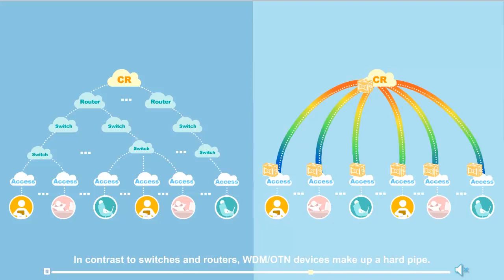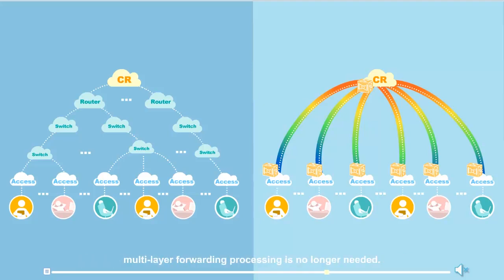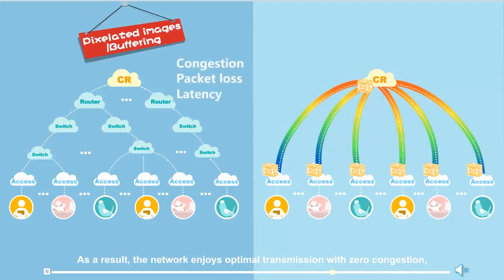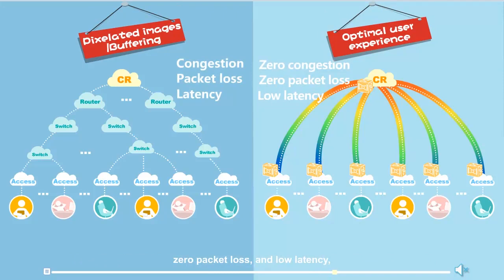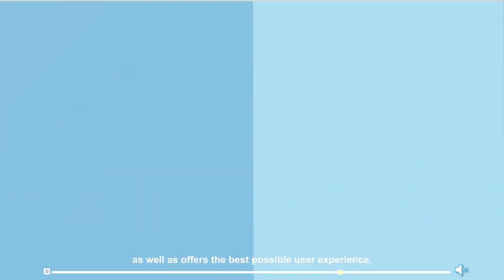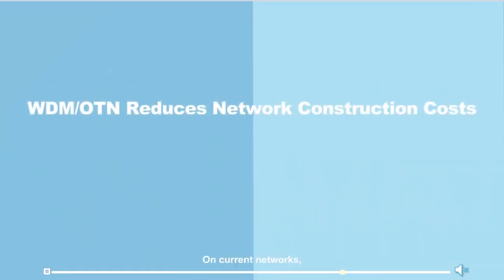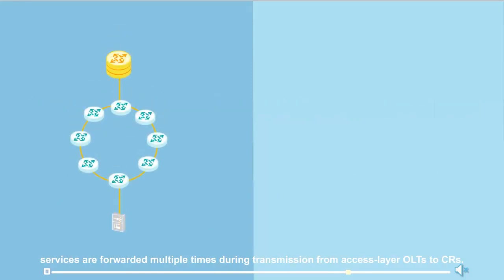Large bandwidth is an inherent advantage of WDM and OTN devices. In contrast to switches and routers, WDM and OTN devices make up a hard pipe. Once this pipe is constructed between the access layer OLTs and core layer core routers, multi-layer forwarding processing is no longer needed. As a result, the network enjoys optimal transmission with zero congestion, zero packet loss, and low latency, offering the best possible user experience.